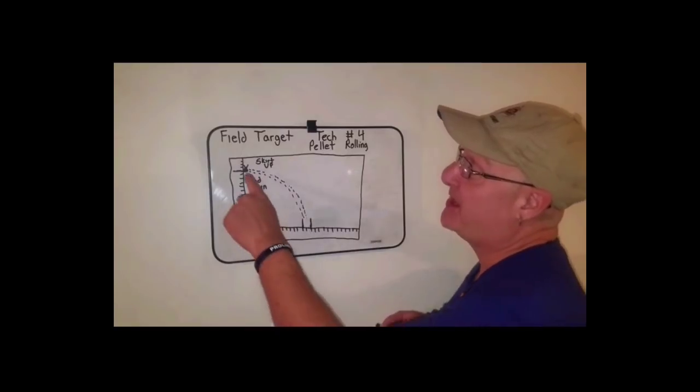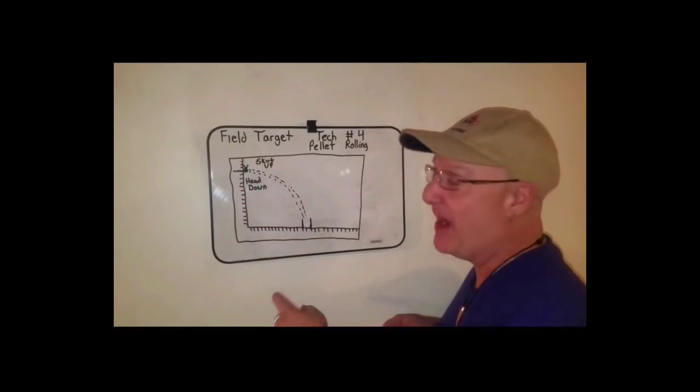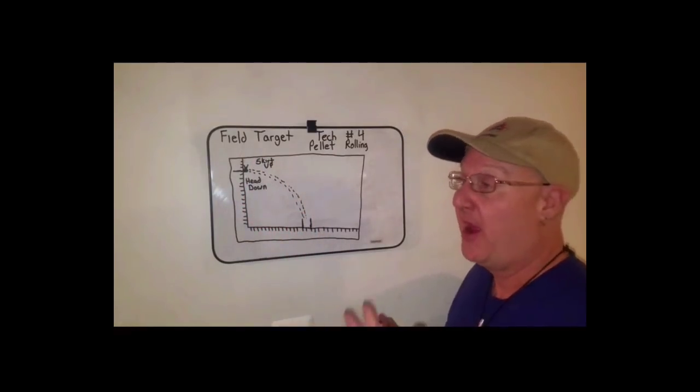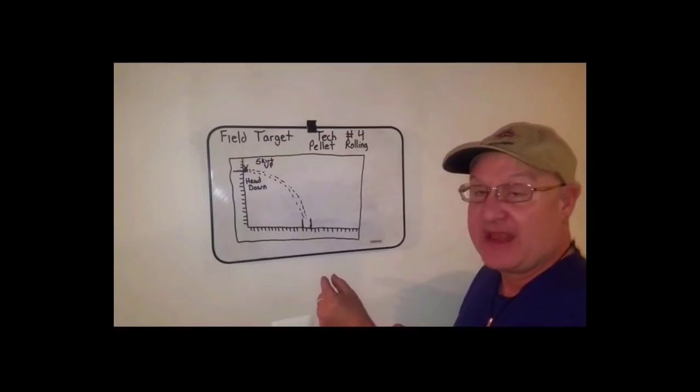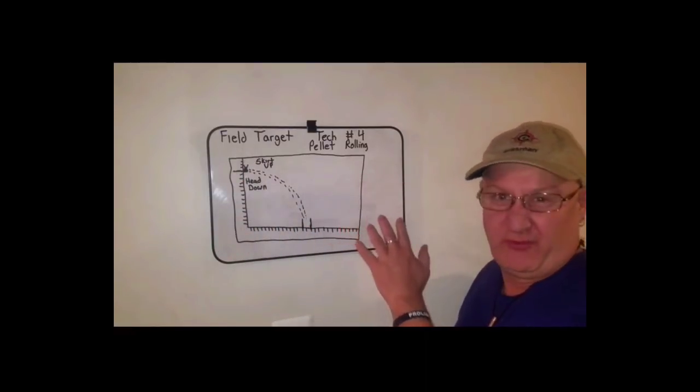And what we do is we pick a spot. I like to pick a spot very high up on the ruler to get the most amount of travel out of it. The longer the pellet rolls, the more accurate it's going to be in a given space. So you don't want it this small, realistically.